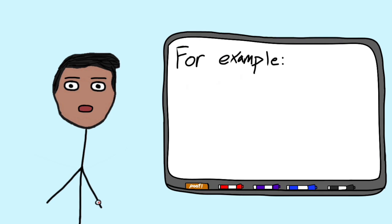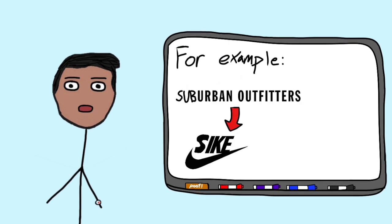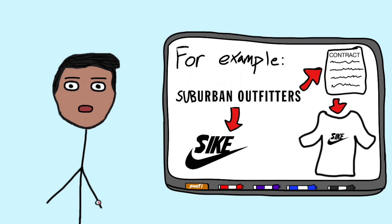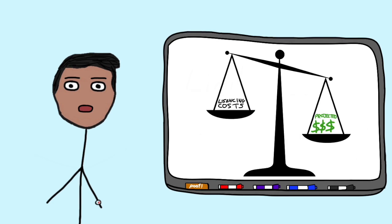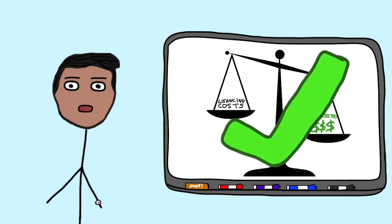Usually, the way clothing companies can make apparel using a specific brand is through licensing the rights to that brand to be sold for a set amount of time through a contract. Companies always have to weigh this additional licensing cost against projected revenue, and if it's low enough, they'll decide to produce branded apparel.